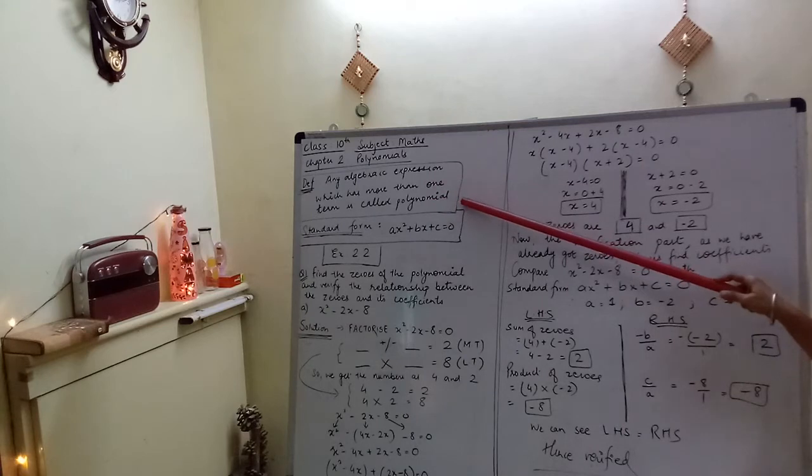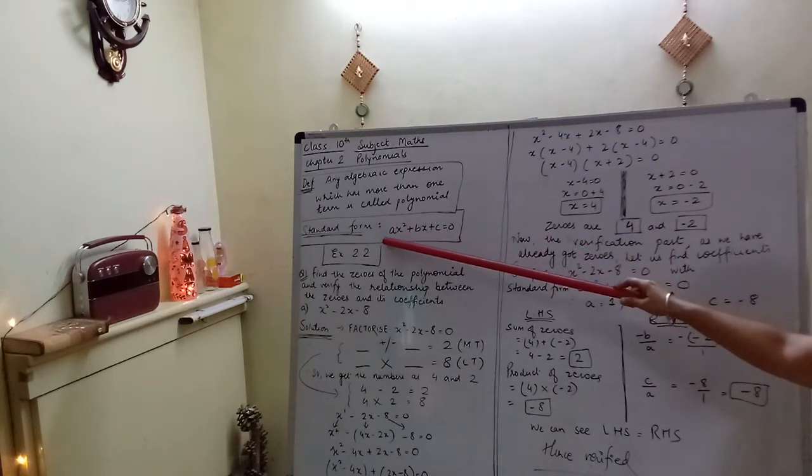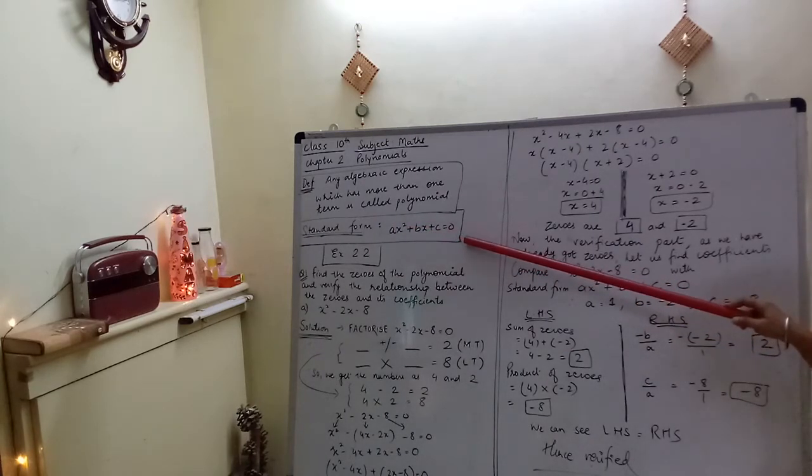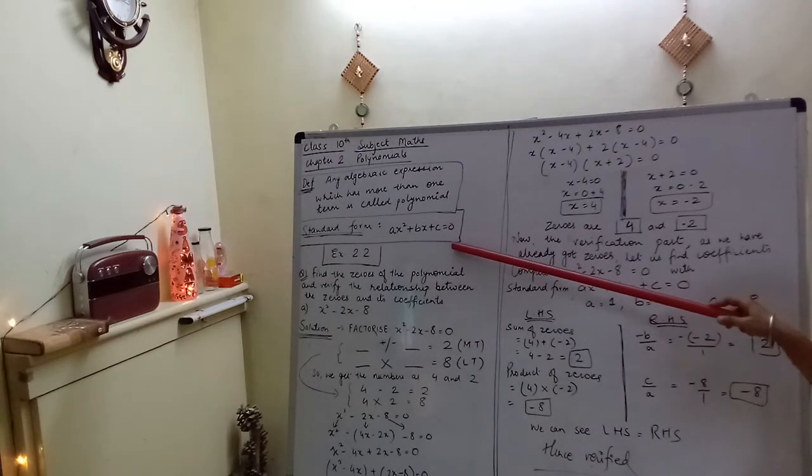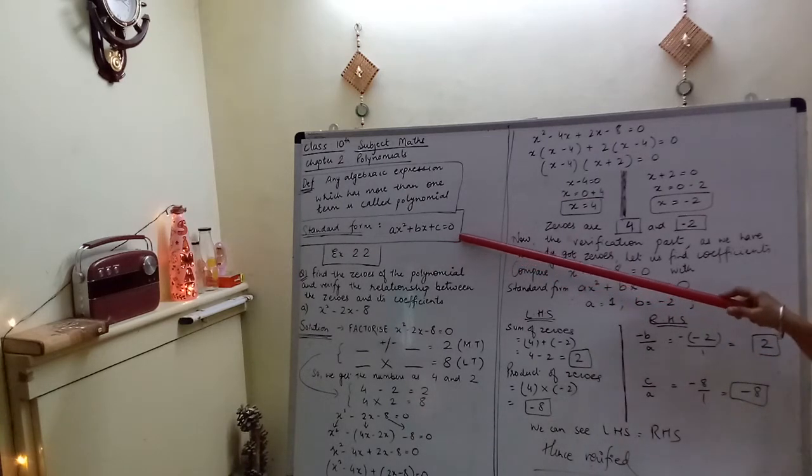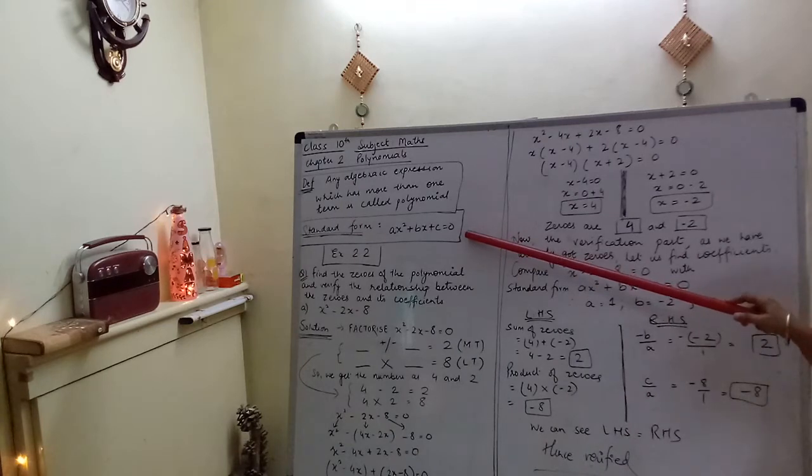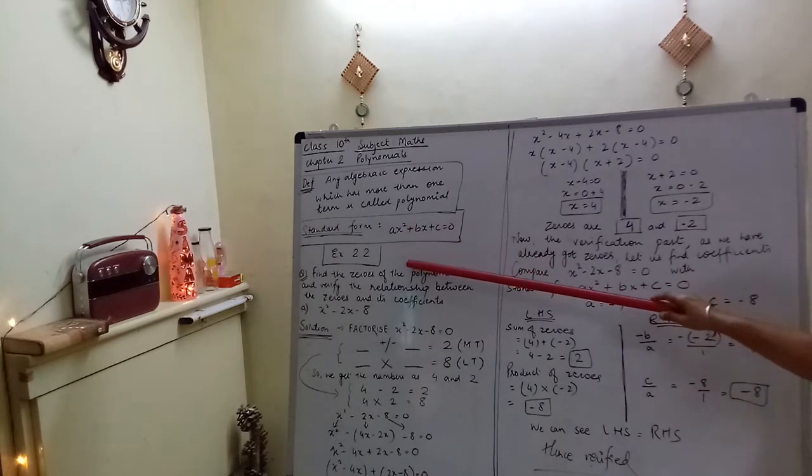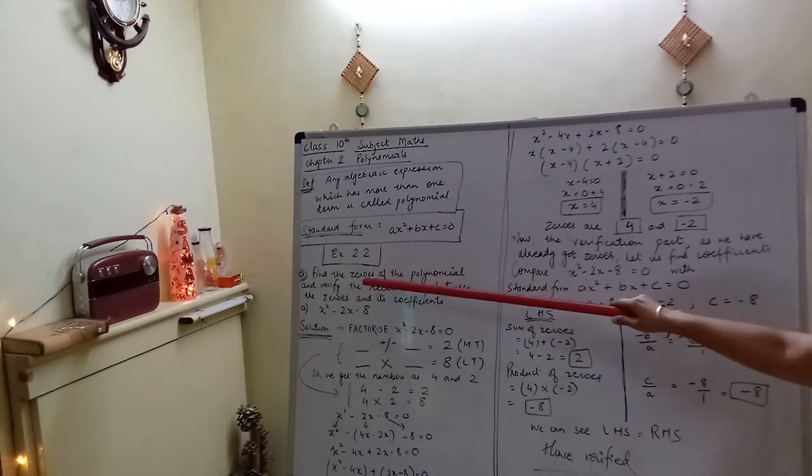In class 8th and 9th, but the standard form what we are going to study in class 10th is ax square plus bx plus c equals to 0, and this is also known as quadratic polynomial. Quadratic polynomial means degree 2, degree 2 means the highest power is 2. Now let's start the exercise.